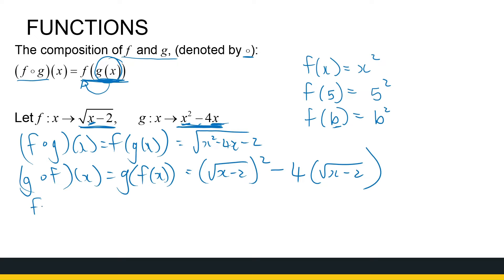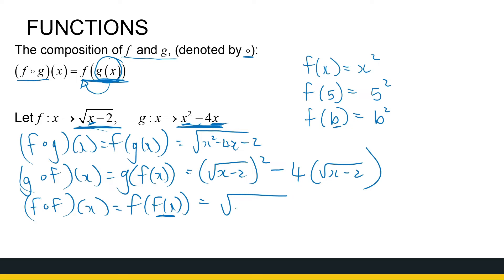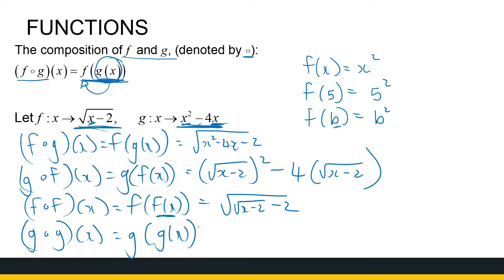I can always take the composition of a function with itself. f composition f is f of f of x — meaning go to function f, everywhere you see an x, you now put the whole of f of x. So it's the root of (root of x minus 2) minus 2. Similarly, I can find g composition g of x — go to function g, everywhere I see an x, put the whole of g of x. So that's x squared minus 4x, giving x squared minus 4(x squared minus 4x). That is the composition of two functions — substituting one function into another.